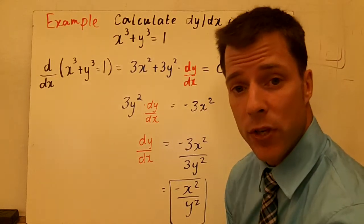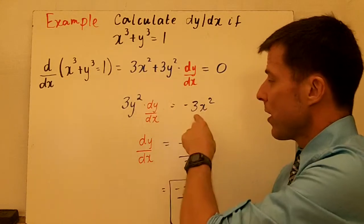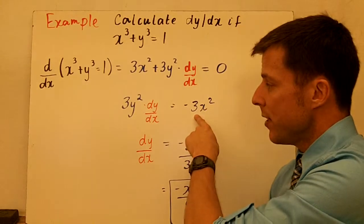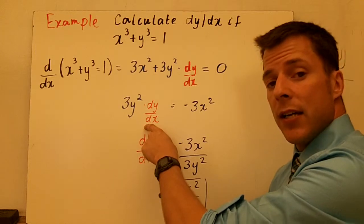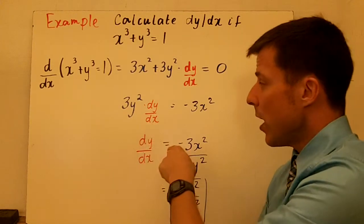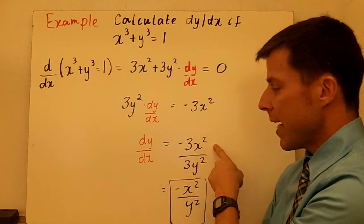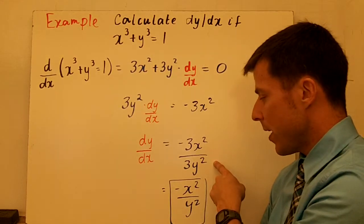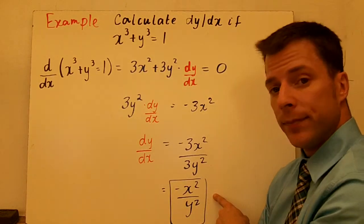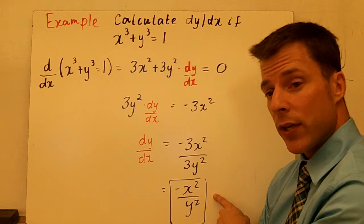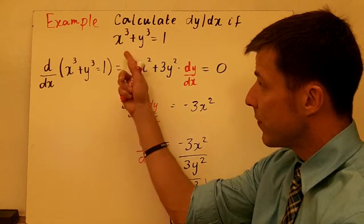The derivative of any constant is 0, so now I just have to resolve the equation for dy/dx. I subtract 3x squared from both sides, and then I divide each side by 3y squared. When I do that, I get negative 3x squared divided by 3y squared, which simplifies to negative x squared over y squared. So that is the derivative of this function.